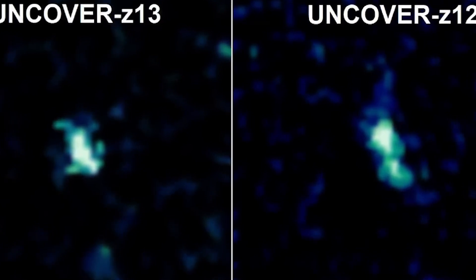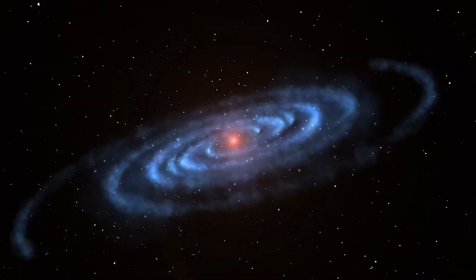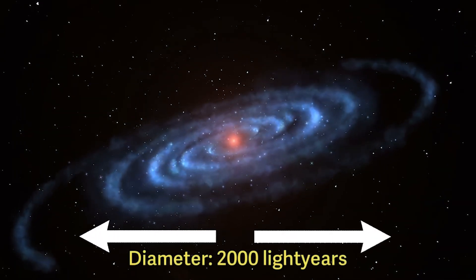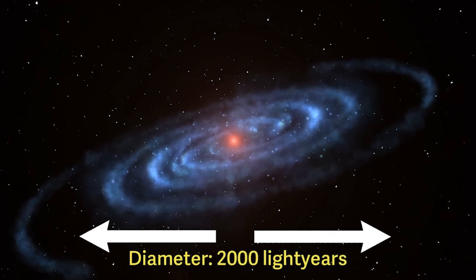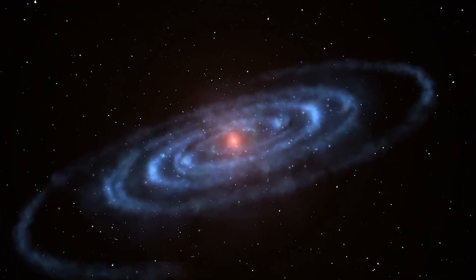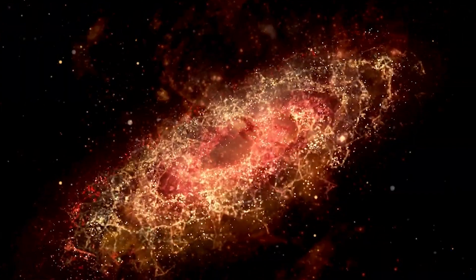Moreover, these galaxies are notably larger, with Uncover Z 12 featuring an edge-on disk approximately 2,000 light-years across, six times more extensive than other galaxies from that era.